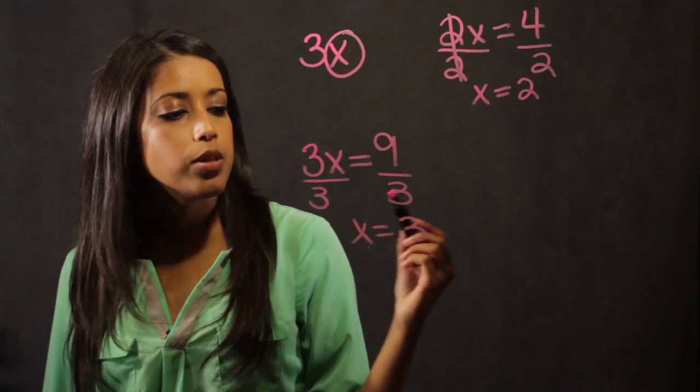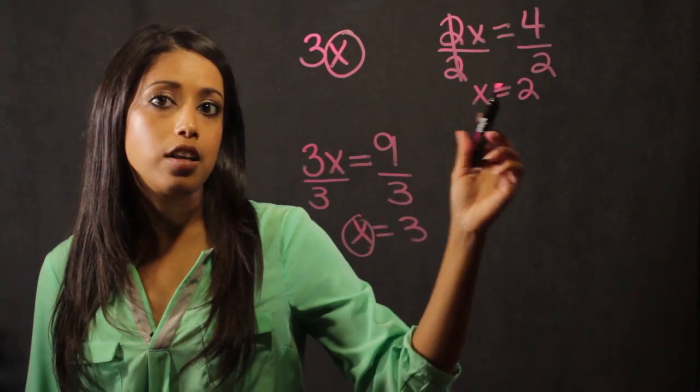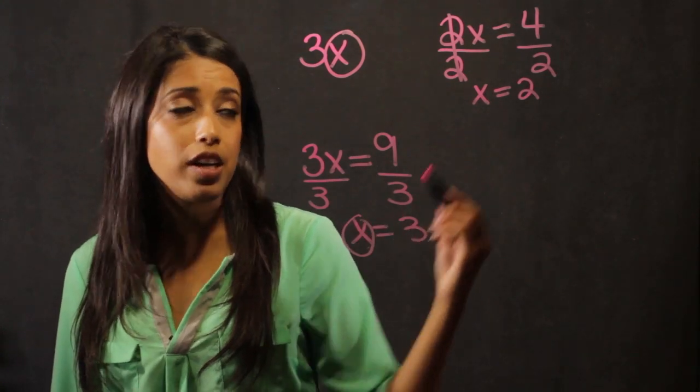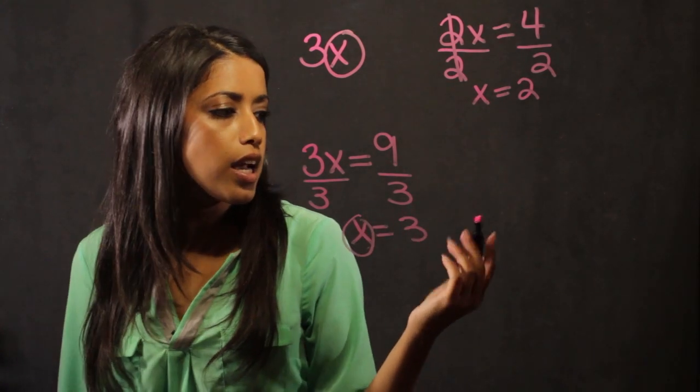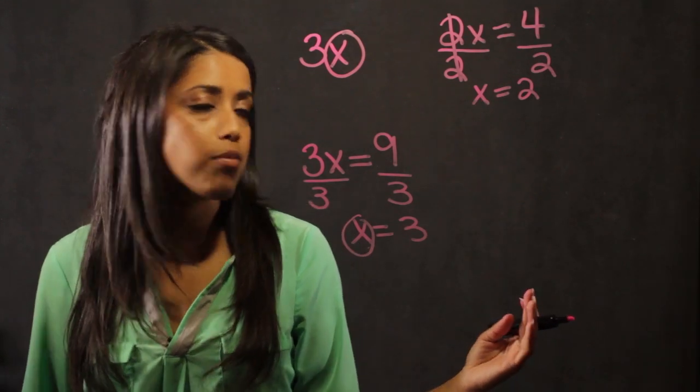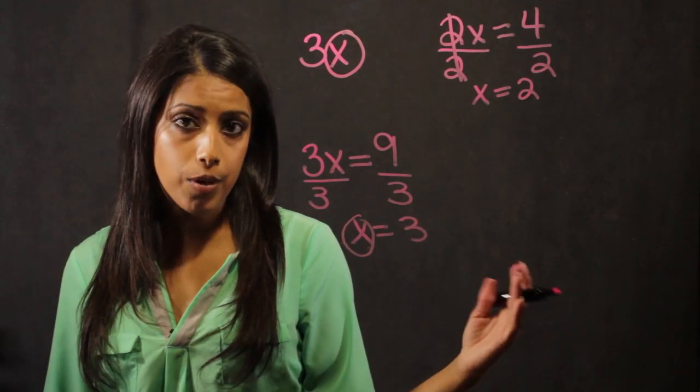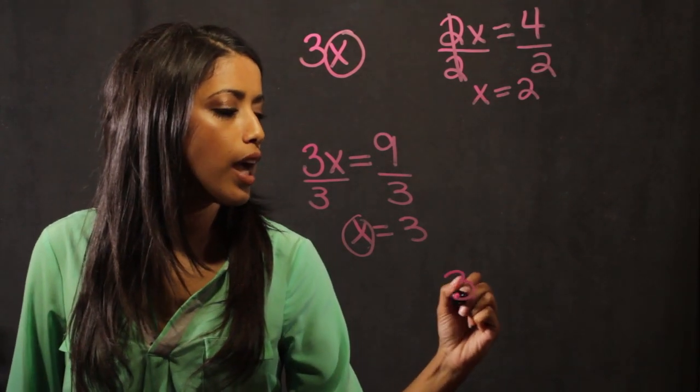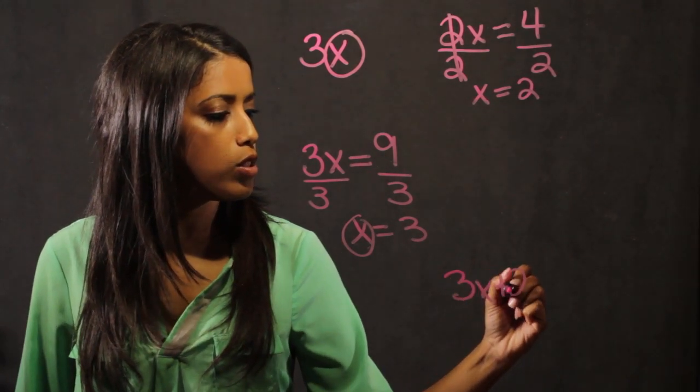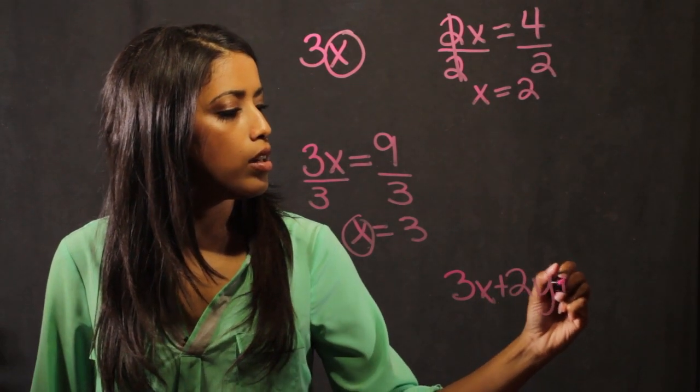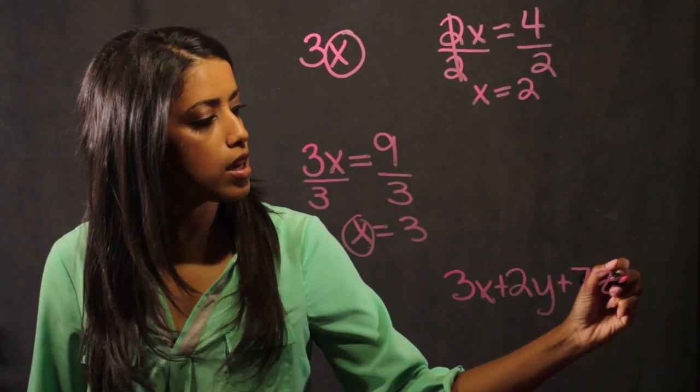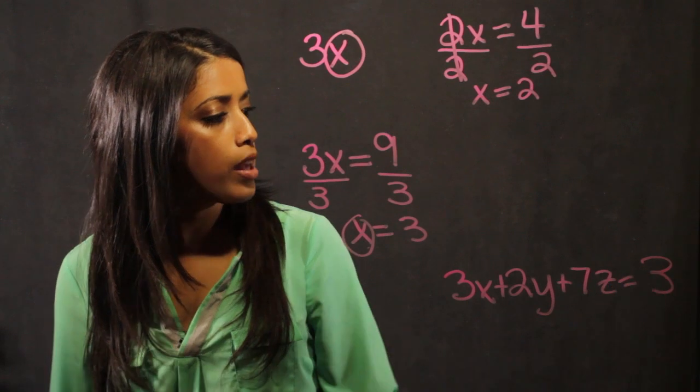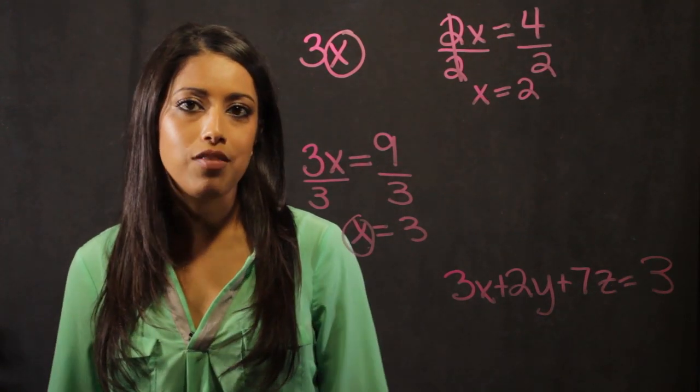So variables, though they may be the same in another problem, can represent different numbers. The other thing, as you advance in algebra, you're going to have problems that have more than one variable in a single problem. So an example of that would be 3x plus 2y plus 7z is equal to 3. So this has been Help with Math Variables.